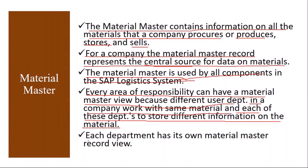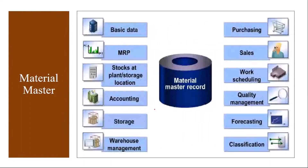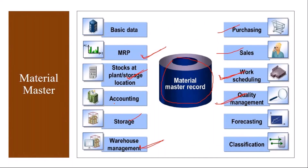In the Material Master, every department has its own view. The sales team will maintain their data in sales views, the quality control department in quality views, the planning department in MRP views, the manufacturing department in work scheduling, the warehouse team in WM views, and the inventory team in storage and stock at plant/storage location views. Basic data is common for all.